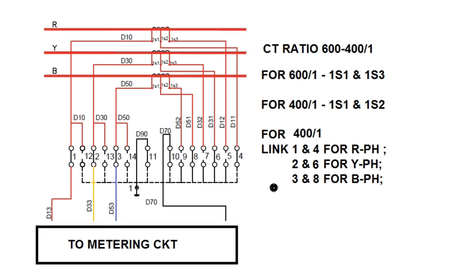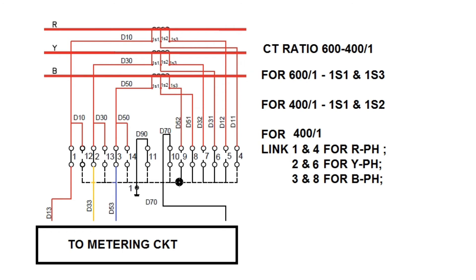For CT ratio selection: for 600/1, we connect 1S1 and 1S3; for 400/1, we connect 1S1 and 1S2. On the other side of the TB, terminals 4–5, 5–6, 6–7, 7–8, 8–9, 9–10, 10–11, 11–14, 14–13, and 13–12 are shorted together on the other terminal.